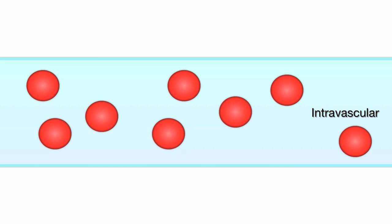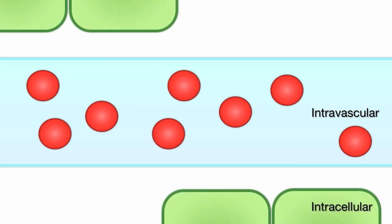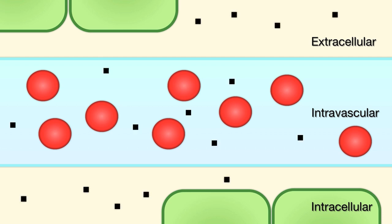Let's look at a clinical example of this by creating a diagram that represents compartments in the body. The intravascular compartment is the area inside blood vessels with red blood cells bathed in plasma, here shown in blue. The intracellular compartment is the area inside the cells of the body, here shown in green. And the extracellular compartment is the area in between these two — that is, outside the blood vessels but not inside the cells — represented in this diagram in yellow. There are particles dissolved in the various compartments, shown as small black squares here.